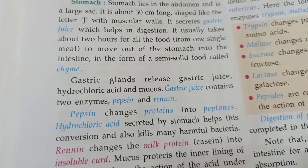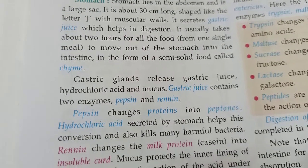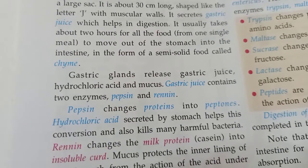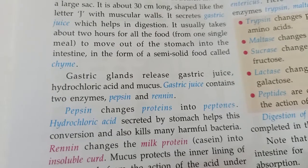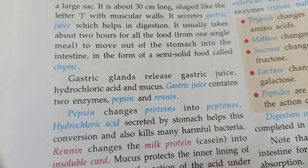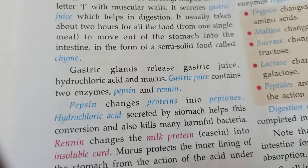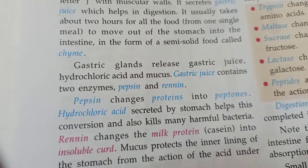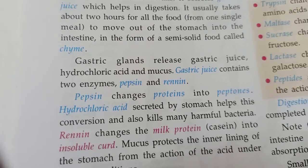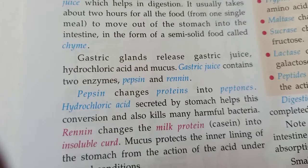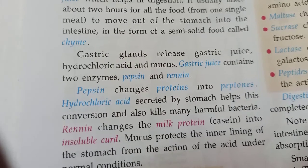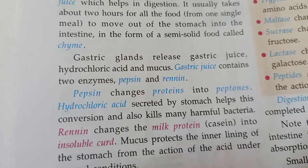The stomach lies in the abdomen and is a large sac about 30 centimeters long, shaped like the letter J, with muscular walls. It secretes gastric juice which helps in digestion. It usually takes about two hours for all the food to move out of the stomach into the intestine in the form of a semi-solid food called chyme.